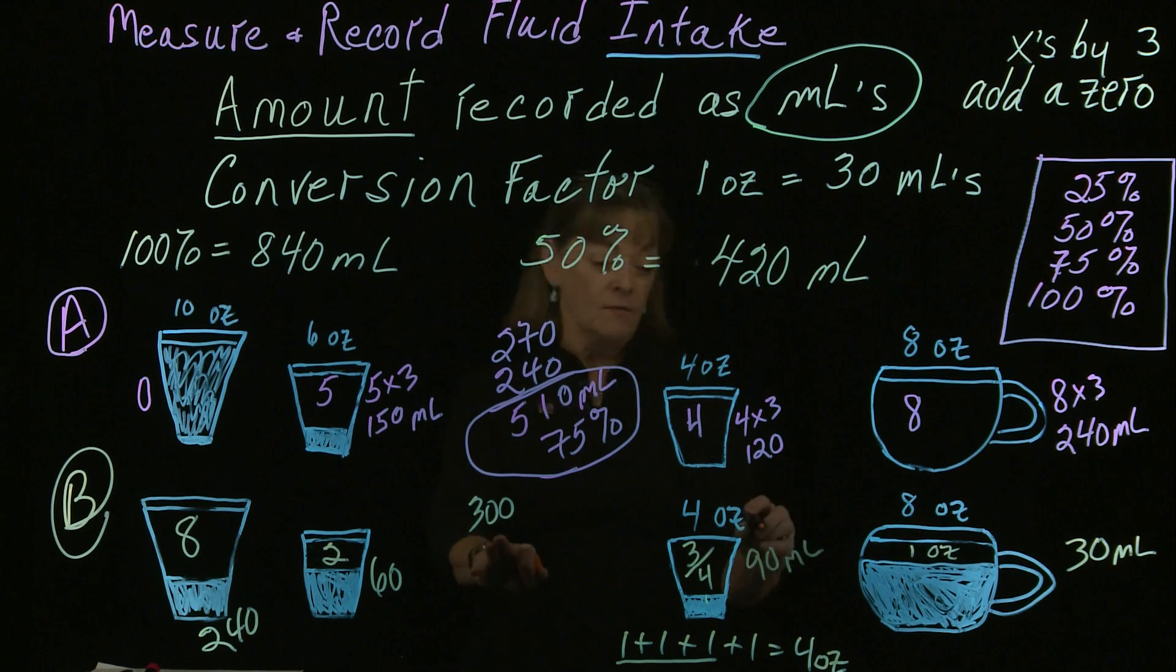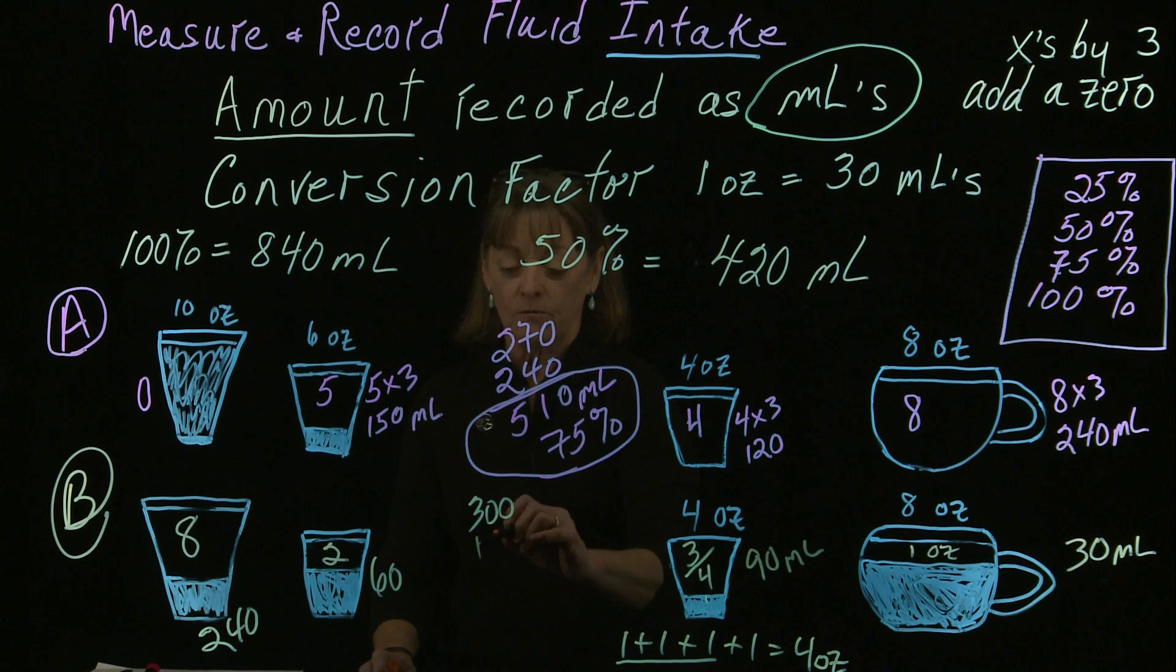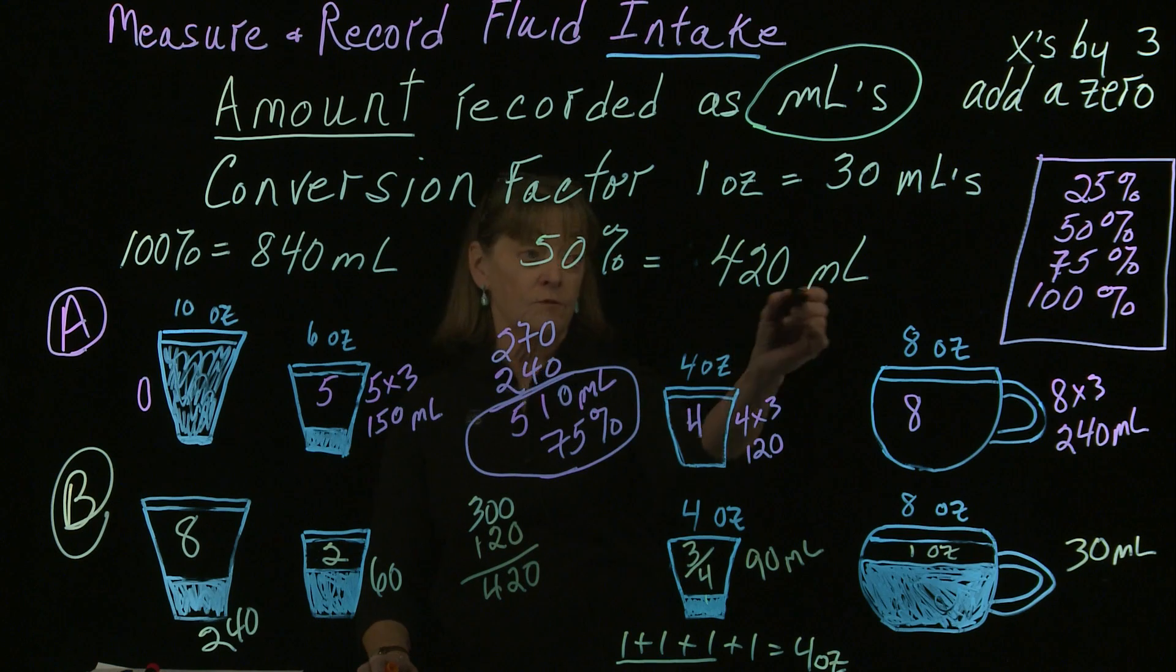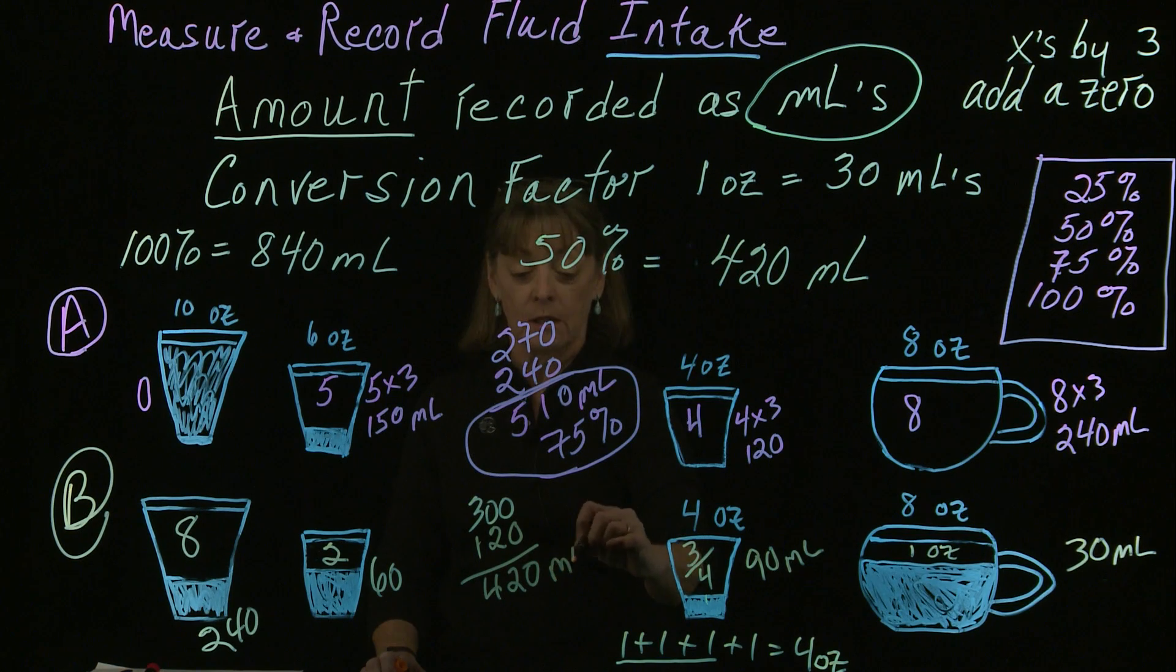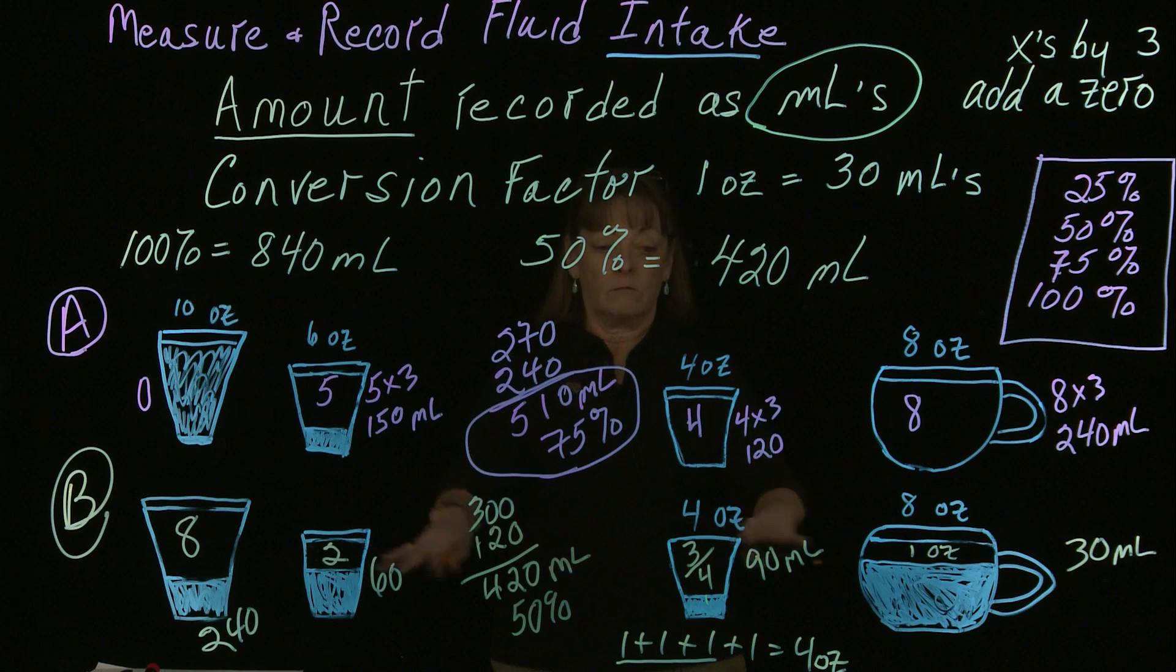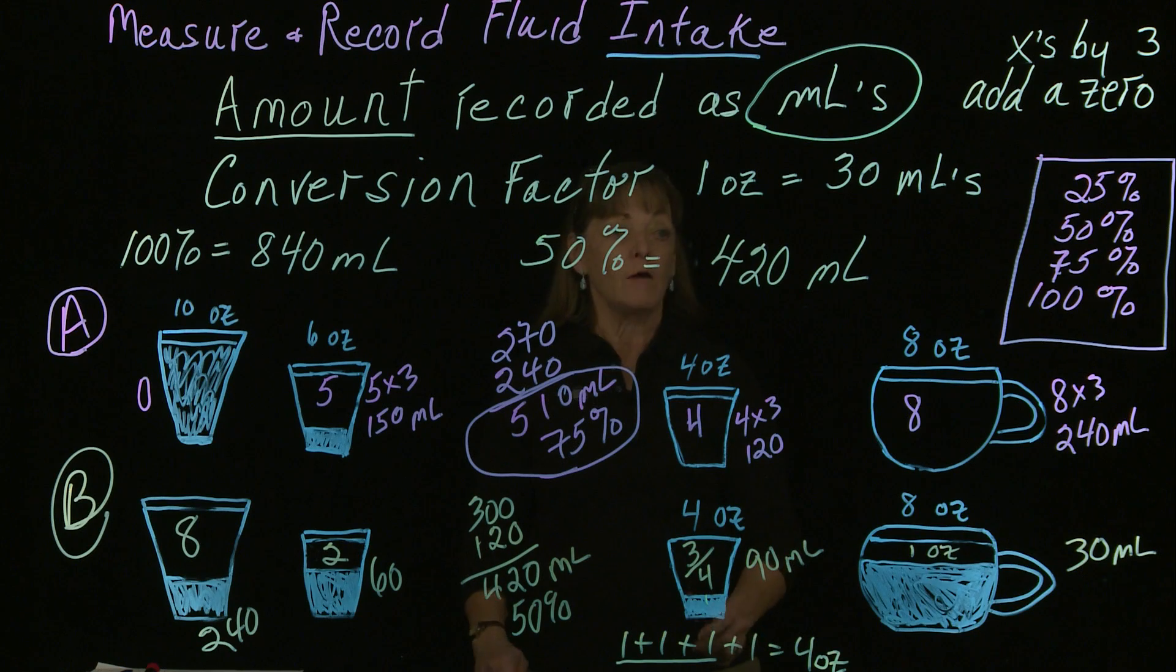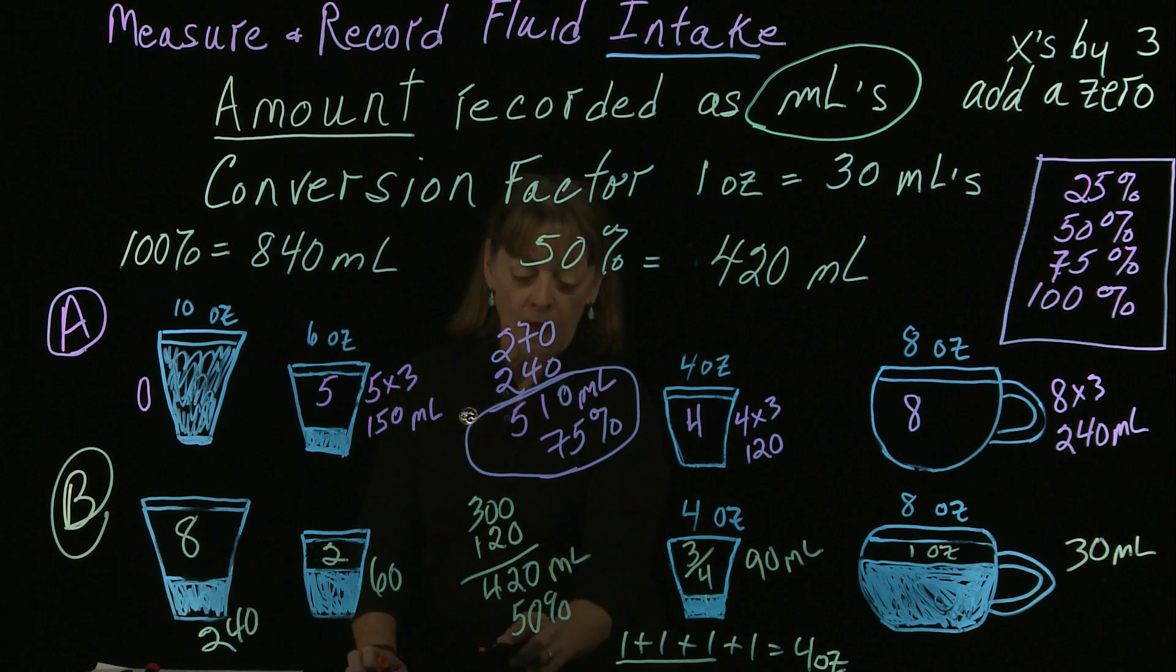Let's add this up. This 90 and 30 is 120, and we had 300 from over here. And so that adds up very conveniently to 420 mL, which is exactly 50% of what he was served. That kind of makes sense when you look at the distribution of what was left behind, that he only drank half of what was there. So that's what I'm going to record on his meal ticket.